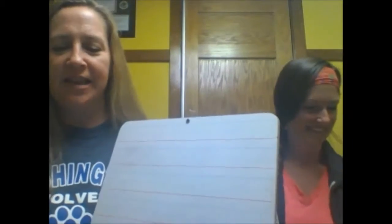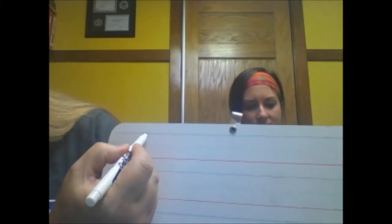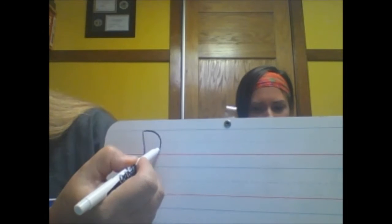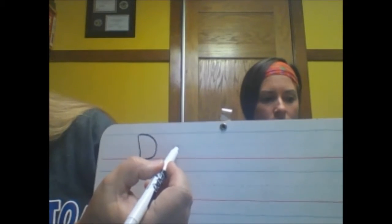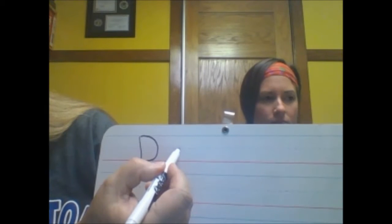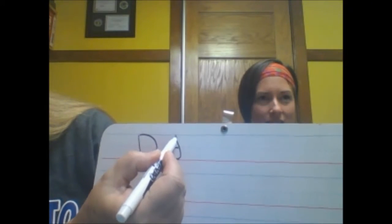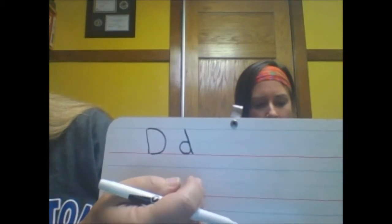All right, so I'm going to show you really quickly how to make the letter D. And later today, you'll get to watch videos and you'll get a chance to practice. The letter D goes down and curves around. That's the uppercase D. And the lowercase D, you start at the midline and you go around, up, and down.